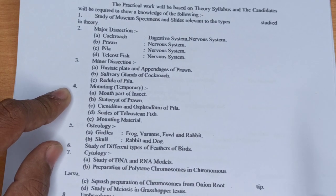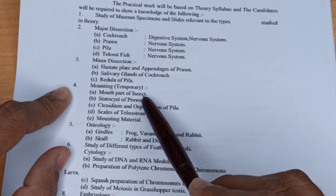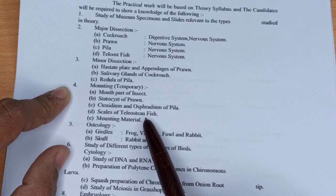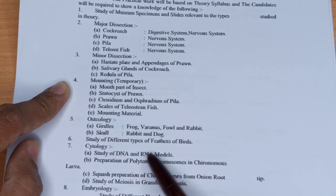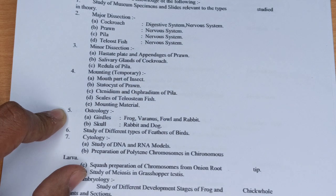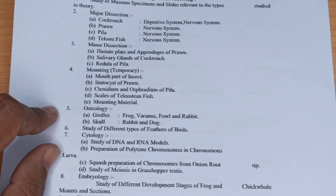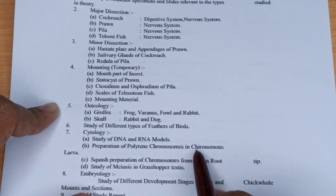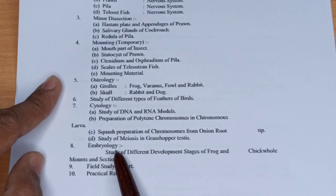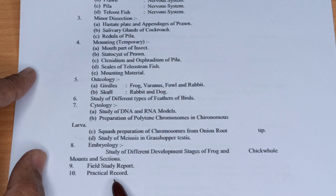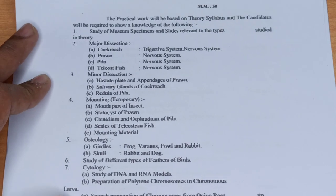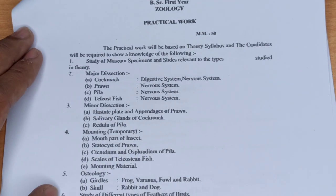Mounting में temporary mounting: mouthparts of insect, statocyst of prawn, ctenidium and osphradium of Pila, scales of Teleost fish। Osteology में girdles और skulls के बारे में पढ़ेंगे। 6th part में study of different types of feathers and birds है। Cytology 7th में है, embryology 9th में है। Field study report और practical record भी हैं। यह था Zoology practical का overall syllabus।